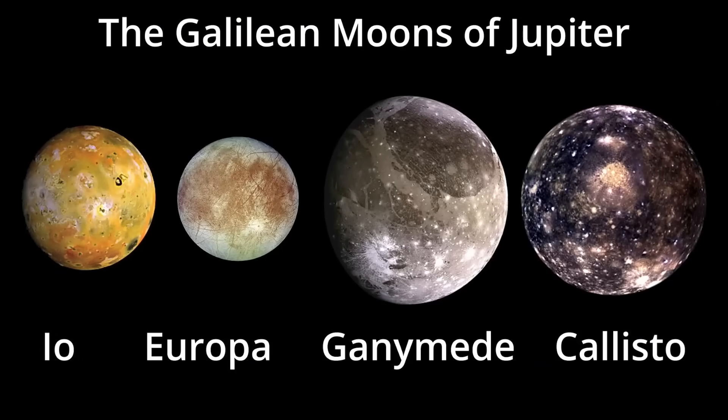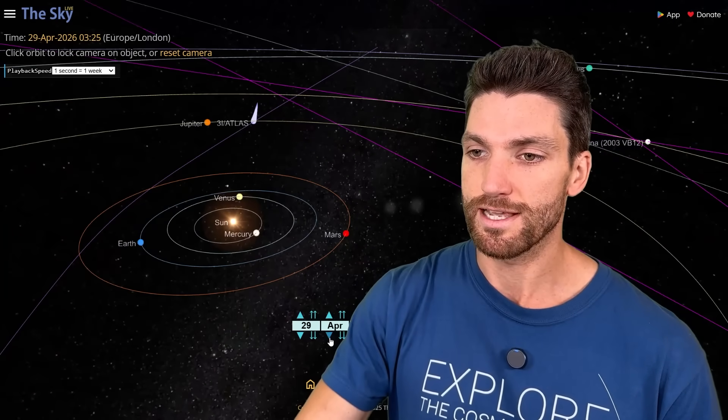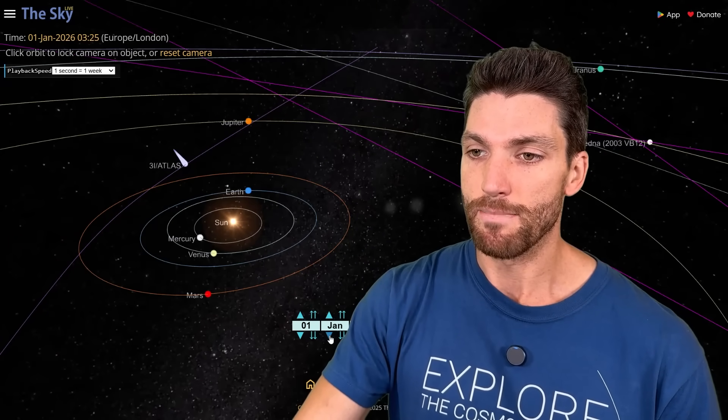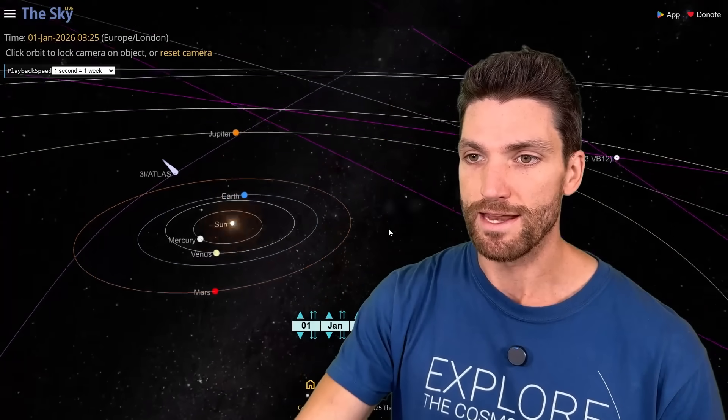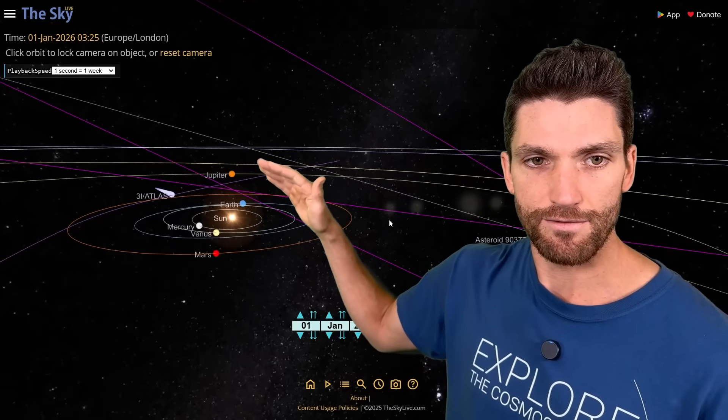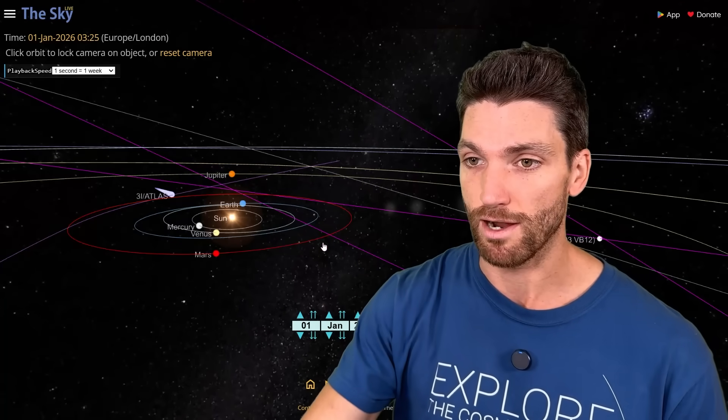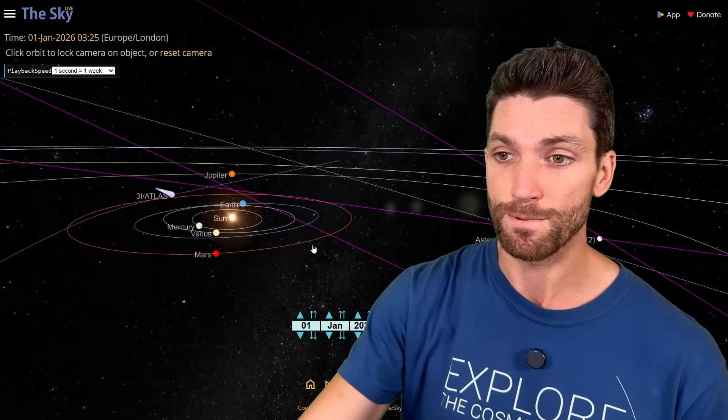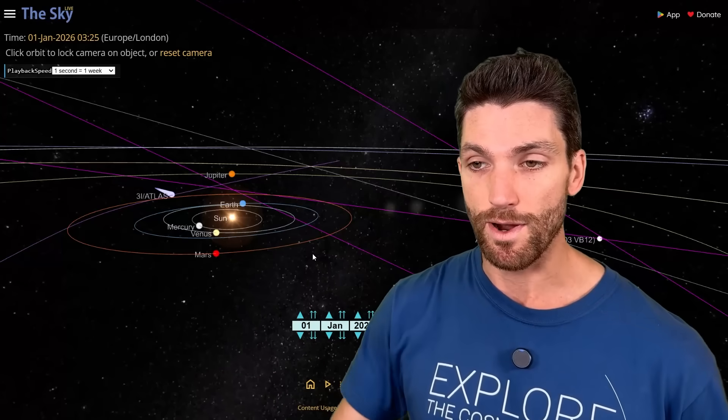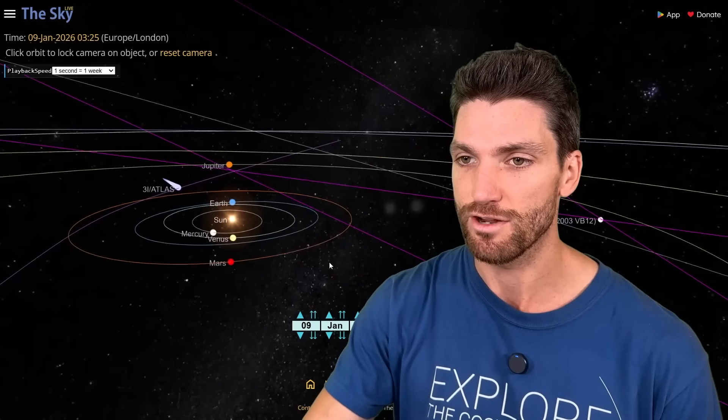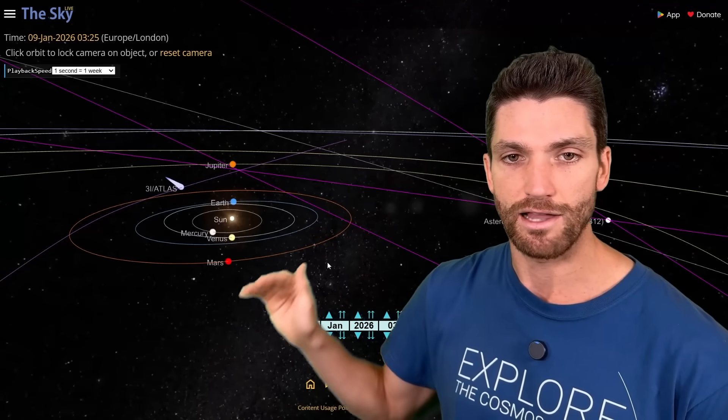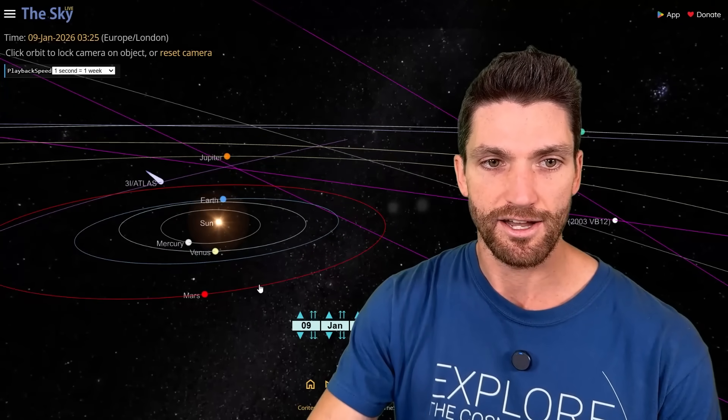Which is where you have the moons Ganymede, Callisto, Europa, perfect places for colonization if you're interested in doing that. But here's where things get most interesting. So we are right here set for January 1st, and you'll notice that we start to have this alignment between the planets, all the inner planets and Jupiter, which is the big heavyweight in our solar system. Let's go forward to the 9th of January and look at how that alignment really gets precise at that time.